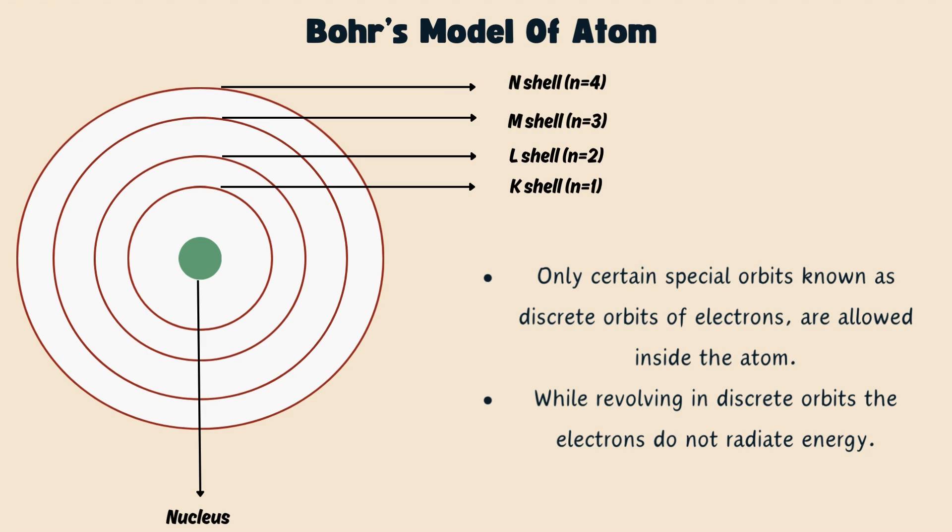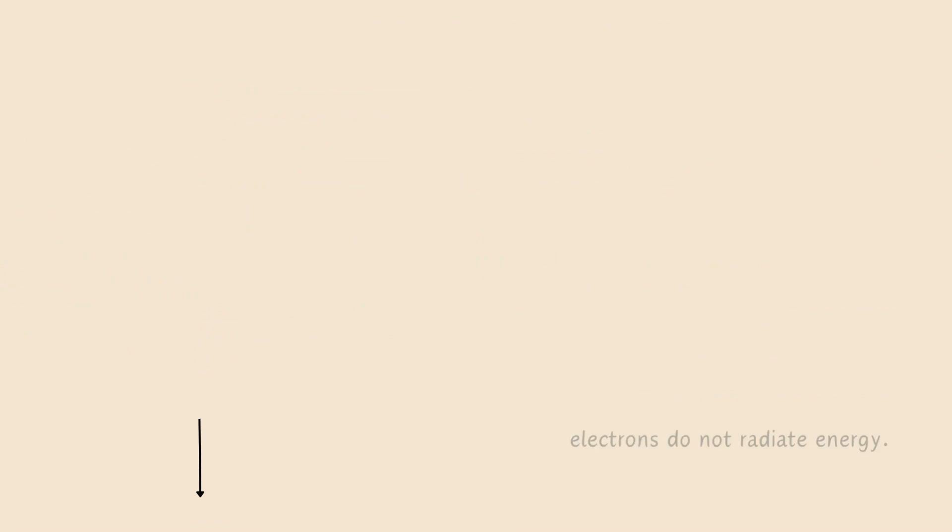In order to overcome these objections, Niels Bohr proposed a model of atom which states that only certain special orbits known as discrete orbits of electrons are allowed inside the atom. While revolving in discrete orbits, the electrons do not radiate energy. These orbits or shells are called energy levels and they are represented by the letters K, L, M, N, etc. or numbers like n equals 1, 2, 3, 4, etc. How the electrons are distributed in different orbits or shells will be discussed in another session.